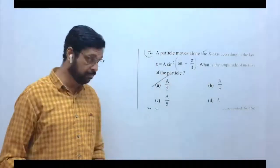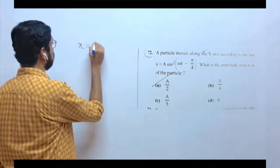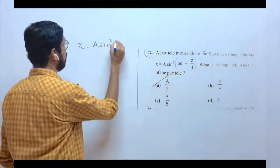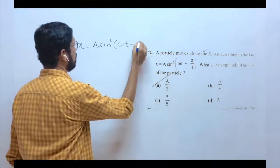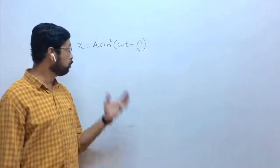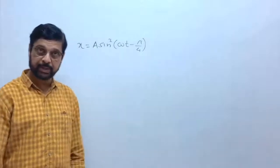The equation of SHM is given as x = A sin²(ωt - π/4), and we have to find the amplitude of SHM.